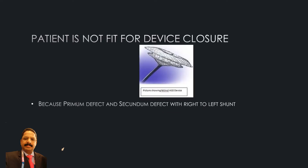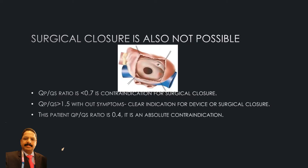Regarding septal closure, this patient is not fit for device closure because the defect is very complicated, and the right-to-left shunt with severe pulmonary hypertension is the main contraindication. Surgical closure is also not possible because the pulmonary-to-systemic circulation ratio is less than 1.0, which is a contraindication. Surgery or device closure is indicated when the ratio is more than 1.5 without symptoms. In this patient, the pulmonary-to-systemic saturation ratio is 0.4, which is an absolute contraindication for both surgery and device closure.